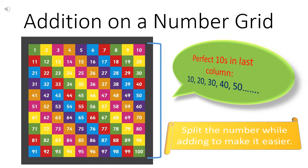Aur kya sikhha tha hum ne? Ki if we have two numbers, we split the smaller number while adding to make it easier. Add karne ke time, jo smaller number hai do numbers mein se, usko hum split kar lete hain, taaki addition easy ho jaye.